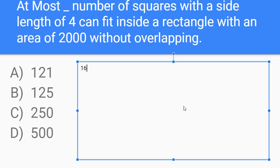And if we divide 2,000 by 16, it'll get you 125. And so that would be our answer, 125. So our answer is B.